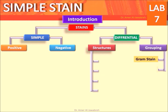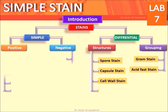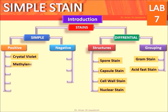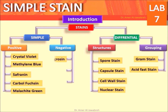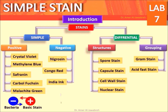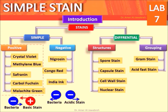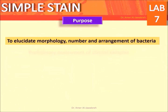Differential stains are used for staining structures and grouping bacteria, such as Gram stain, acid-fast stain, spore stain, capsule stain, silver stain, and nuclear stain. Positive stains include crystal violet, methylene blue, safranine, carbol fuchsin, and malachite green. Negative stains include nigrosin and India ink.